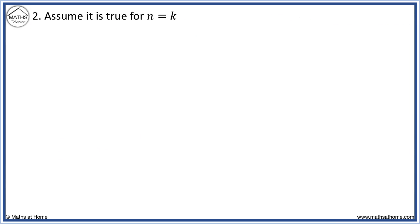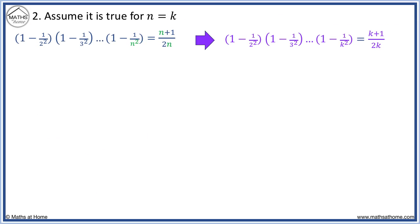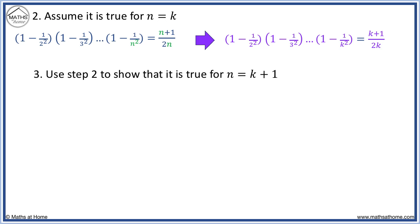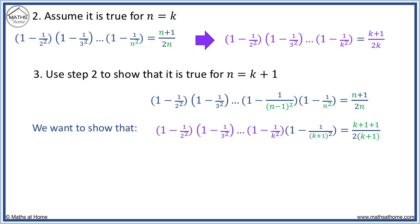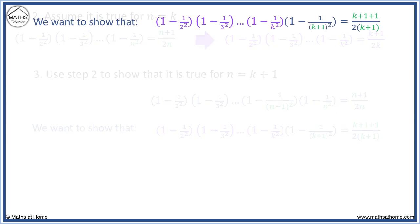We assume true for n equals k by substituting n equals k into the original statement. In the next step, we take the original statement and include an extra term of 1 minus 1 over n minus 1 squared before the final bracket. We substitute n equals k plus 1 to obtain the result we wish to prove, then simplify.